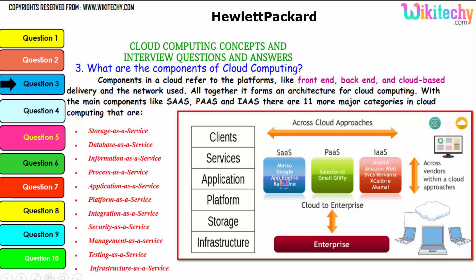For Software as a Service, typical examples are App Engine and Google Maso. For Platform as a Service, examples include Gmail, Glyphi, and Salesforce. For Infrastructure as a Service, there are many companies such as Amazon Web Services, Delvanix, Excalibur, Akamai, and others.